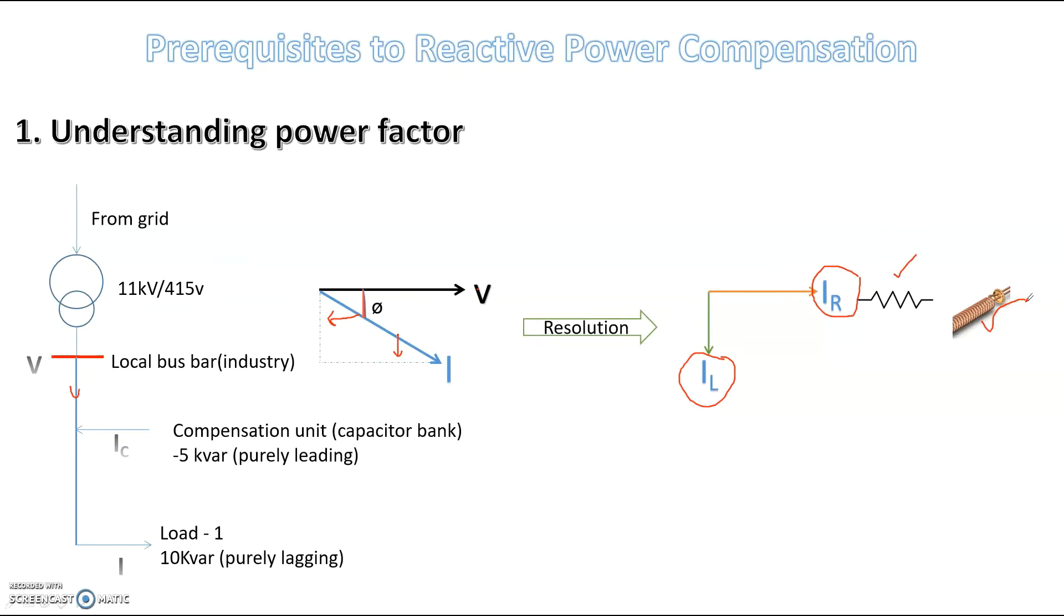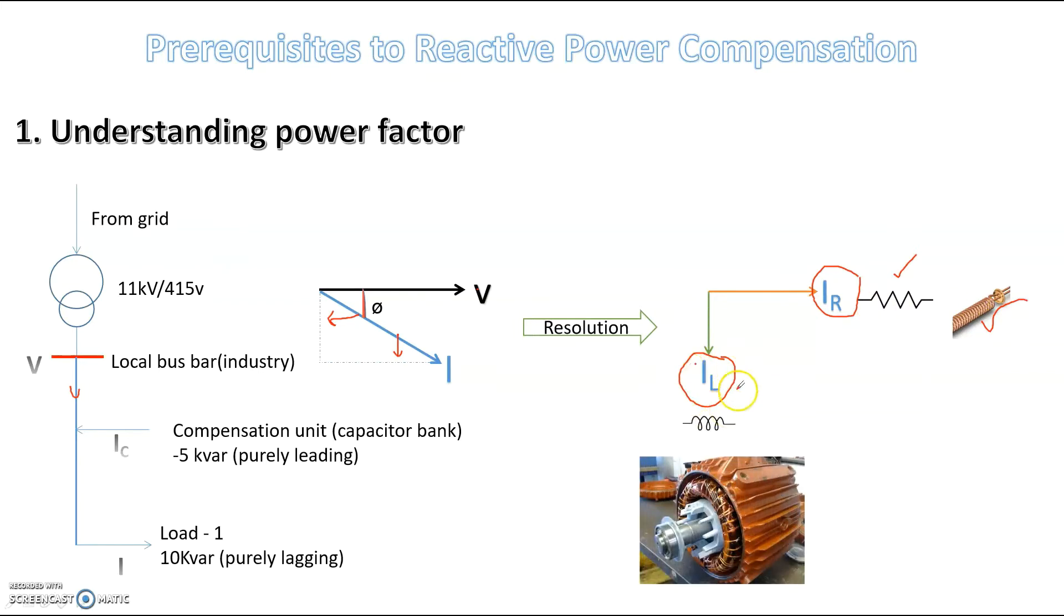This current is basically resistance and resistors are basically the heater elements, the heater elements which are going to cause the heating loss. Now, this inductive component, from where does this inductive component come? The industries have huge motors, and these motors will be having these windings. These windings are basically a lot of coils, and those coils are basically producing the magnetic field. To produce the magnetic field will be requiring the reactive power or a component of the current which is 90 degree out of phase by the voltage. So this inductive current comes from these large industrial motors.